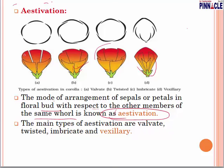Types of aestivation: In valvate aestivation, the edges of the petals are just touching but not overlapping. In twisted aestivation, one margin of the petal overlaps the next one alternately — one edge is below, the next edge of the petal is above. In imbricate aestivation, the margin of sepals or petals overlap one another randomly — it can be both edges below, or one edge above and one below.